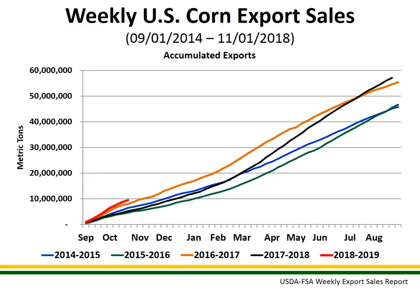This is a graph of the accumulated corn export sales. The shape is a little bit different — we tend to have a slower pace in the winter months, and then the pace of exports tends to expand a bit faster as we move into the summer months. Looking at the 2018-19 sales pace relative to what we've seen historically, we're well ahead of where we have been at this time for the last several years. Again, notice that the scaling on the left-hand side is at 60 million metric tons — the same scaling used for both corn and soybean export sales. The volumes are very similar, but the pace of export sales does vary by crop.